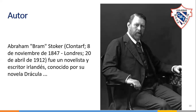Vamos a conocer quién es Bram Stoker. Él nació en 1847 y muere en 1912. Fue un novelista conocido principalmente por su novela muy famosa, Drácula. En 1847 estamos hablando del siglo XIX. 1912 es el siglo XX, cuando muere este personaje. ¿Qué está sucediendo en el mundo entre 1847 y 1912? Muere tres años antes de que se diera un acontecimiento mundial.